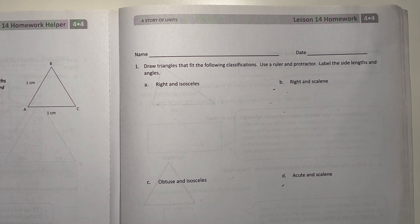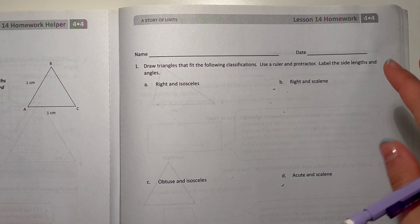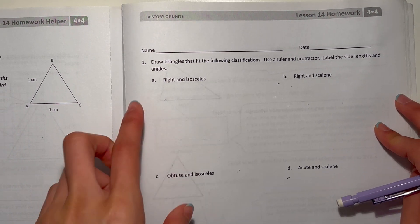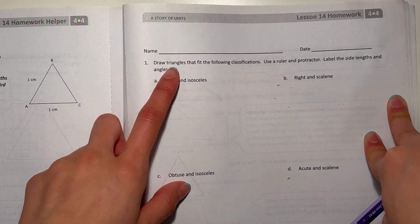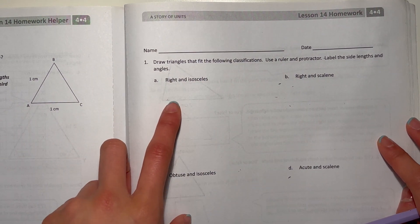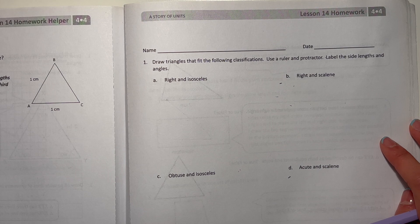Hey guys, Aubrey here. Today I'm doing the Eureka Math grade 4 module 4 lesson 14 homework, so let's get started. Number one: draw triangles that fit the following classifications. Use a ruler and protractor. Label the side lengths and angles.